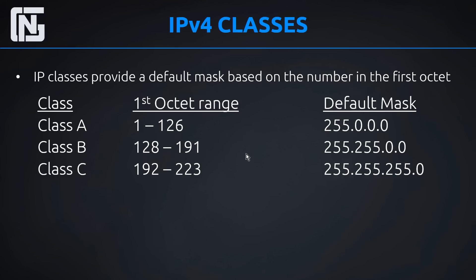You may have noticed the first octet range skips 127. I didn't miss it — it's like that on purpose. 127 is loopback. Anything that starts with 127 in the first octet is a loopback address, meaning if you ping anything starting with 127 from your computer — if you open your command prompt — you're pinging yourself.